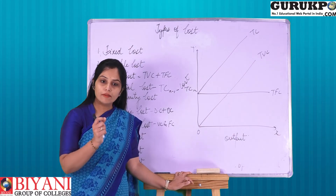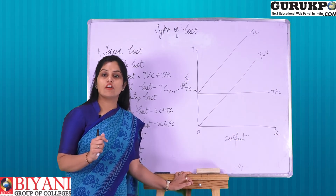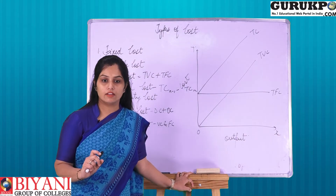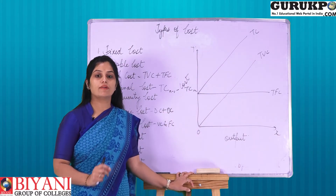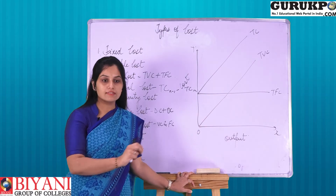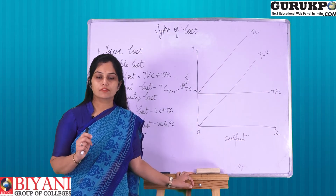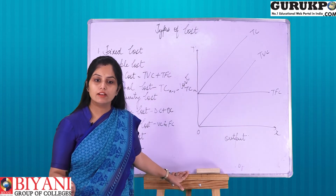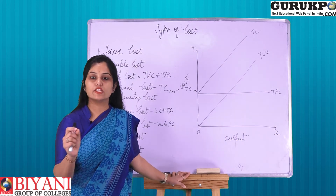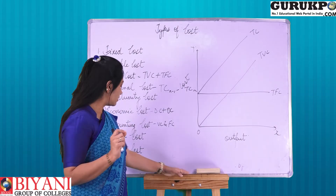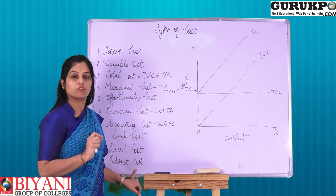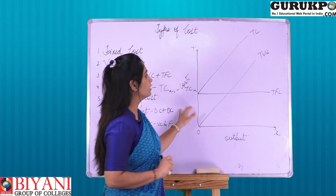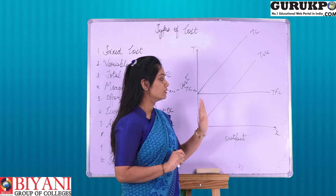Direct cost I have already explained. Indirect costs are those costs which are paid indirectly but are helpful for our production. For example, the warehouse cost is an indirect cost because I have to store my product in a place known as a warehouse. The cost of transportation — from which my raw material is coming or my finished goods are going to respective places — these are indirect costs.